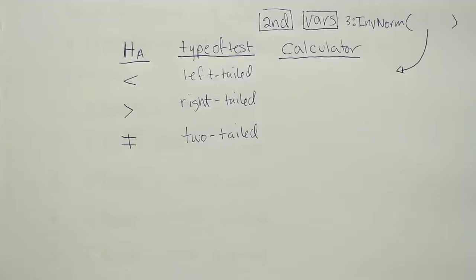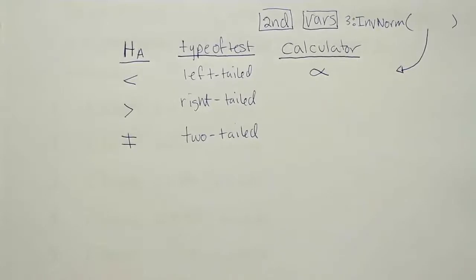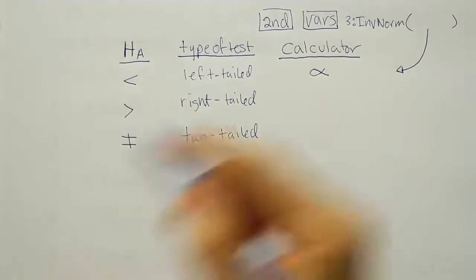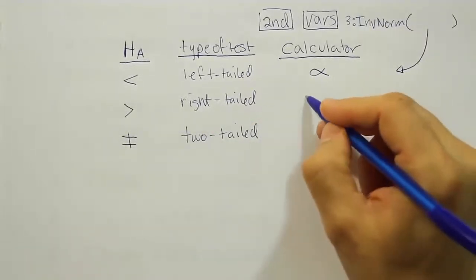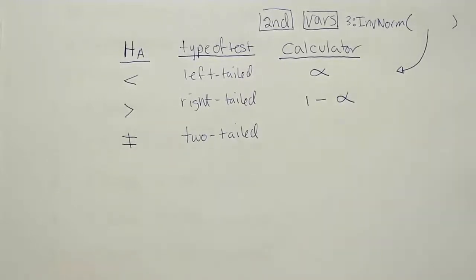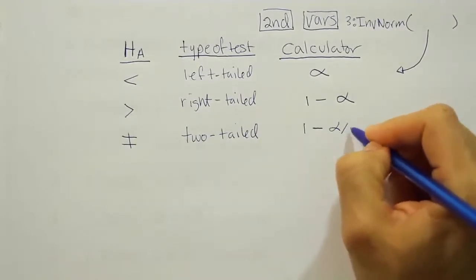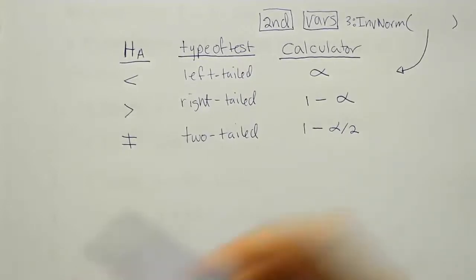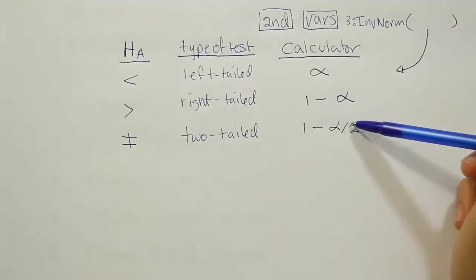For the left-tailed test, all the alpha is devoted to one tail on the left-hand side, so all you give the calculator is alpha as a decimal. For the right-tailed test, you give the calculator one minus alpha, and that will give the correct value. For the two-tailed test, you give it one minus alpha divided by two. So: left-tailed → alpha; right-tailed → 1 − alpha; two-tailed → 1 − alpha/2.